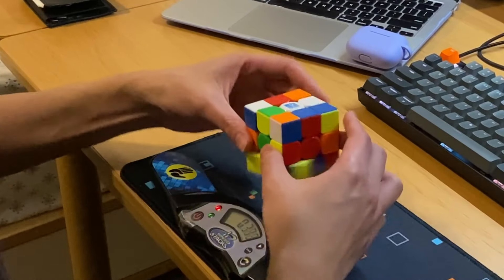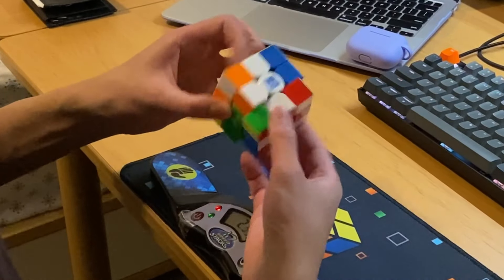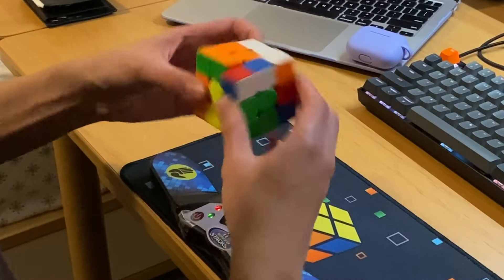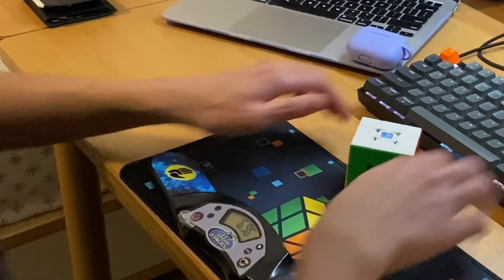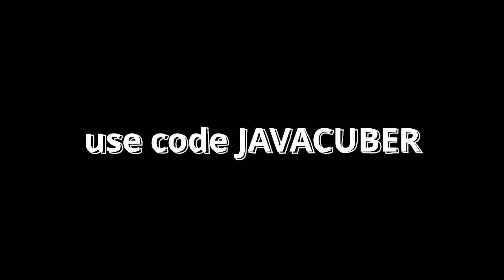Alright, that's it for this video. It's pretty short, and it's just unscripted me talking about my opinions on the V5. If you want to buy this cube, you can get it on SpeedCubeShop and use my discount code JAVACUBER for a discount on your entire order. Thanks for watching, and goodbye.